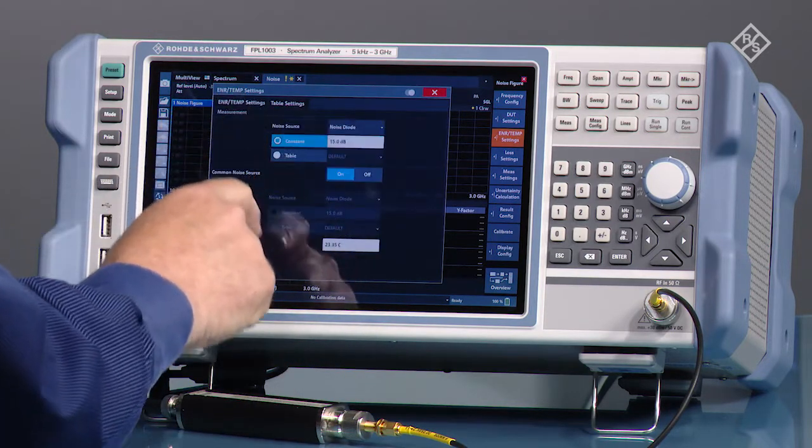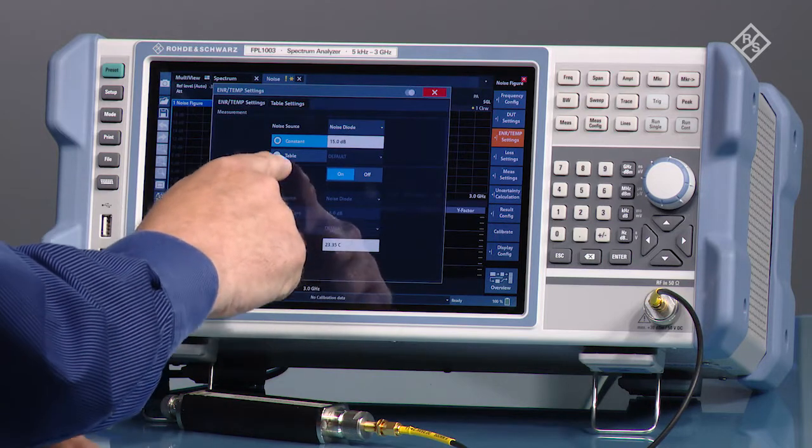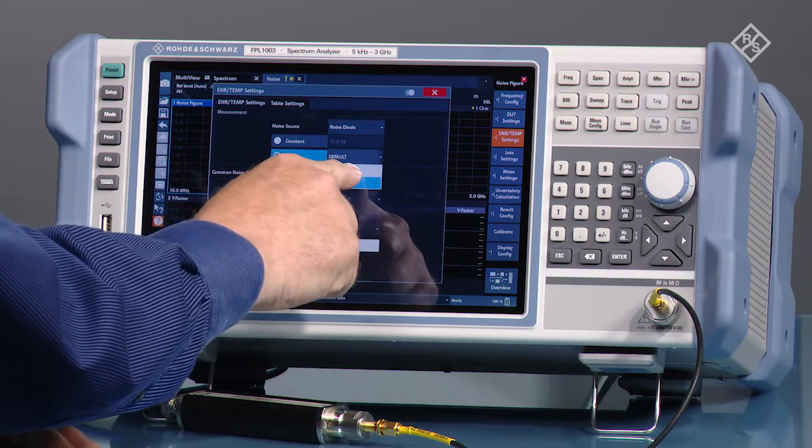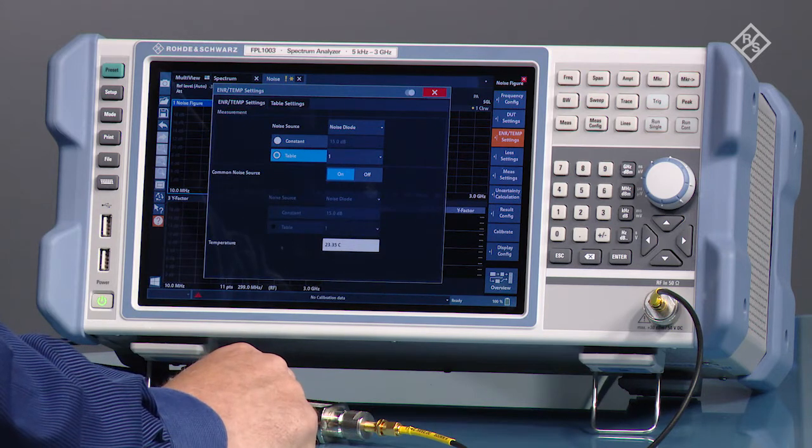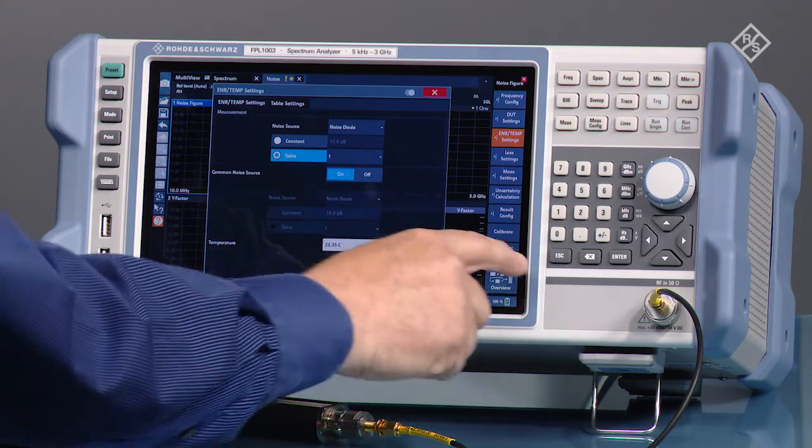Now we're going to go back over to the ENR temp settings and select table, then select the table we just created.